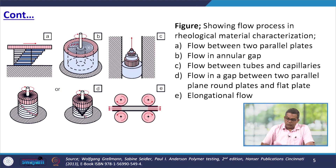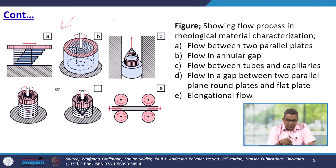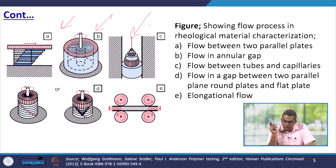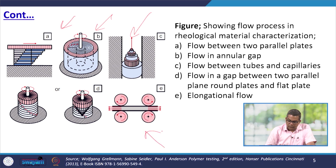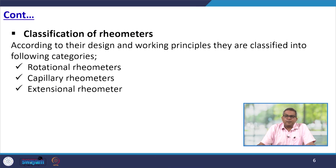This particular figure shows the flow process in rheological material characterization: flow between two parallel plates, flow in an annular gap, flow between tubes and capillaries, elongational flow, and flow in the gap between two parallel plane or round plates and flat plates.